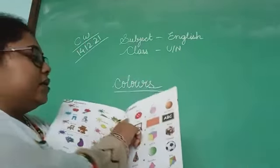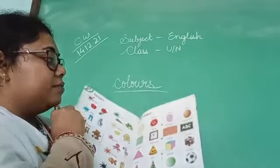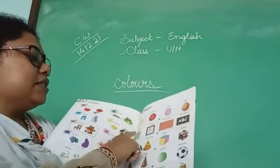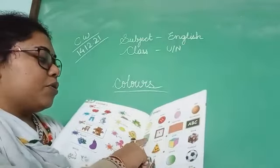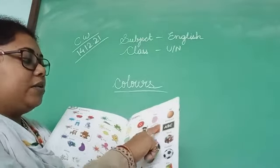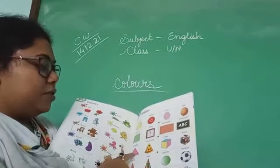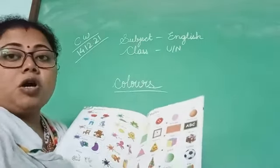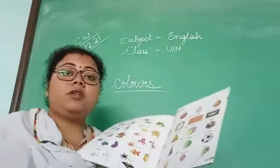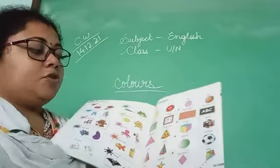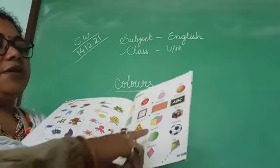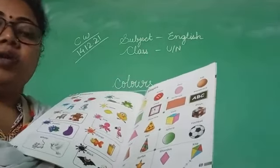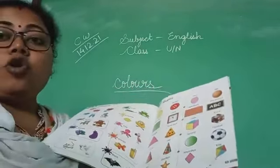Now again, let me revise all the shapes: Circle — button. Oval — egg. Square — clock. Rectangle — blackboard. Triangle — pizza slice. Cube — block. Cone — cap. Sphere — football. Star — starfish. Rhombus — kite.